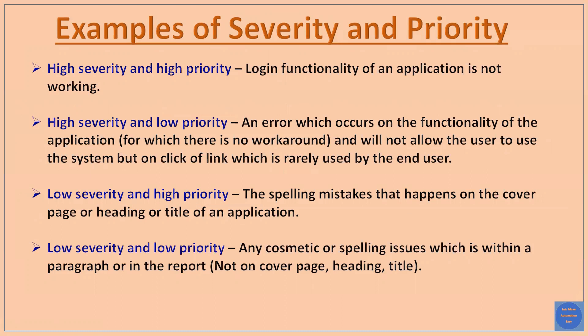The second example is high severity and low priority: an error occurs on functionality for which there is no workaround and it does not allow the user to use the system, but it happens on a link that is rarely used by the user. This is called high severity and low priority.